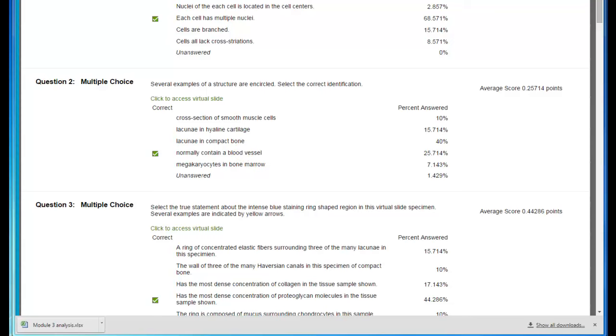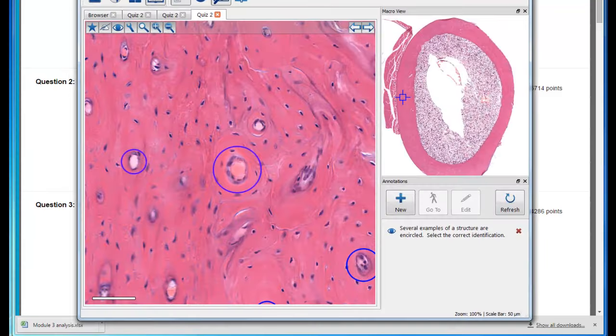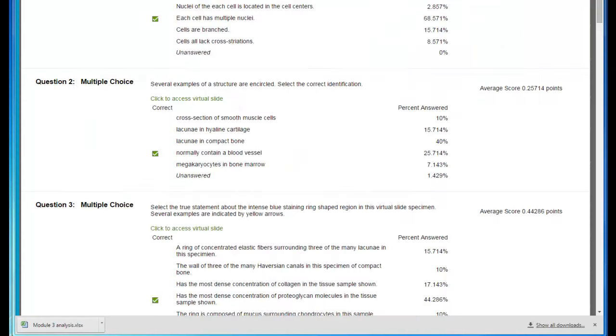Not cartilage. Cartilage would not be eosinophilic like this, and the cells would be shaped entirely differently. And you wouldn't see the pattern of an osteone in bone.